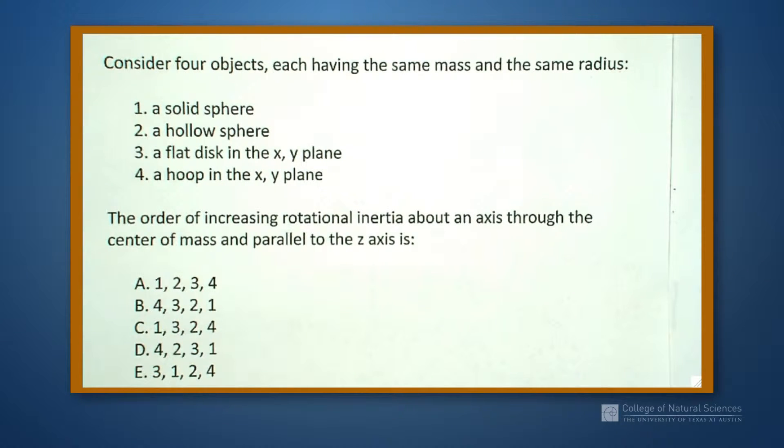So we consider four objects, each having the same mass and the same radius: a solid sphere, a hollow sphere, a flat disk in the x-y plane, and a hoop in the x-y plane.